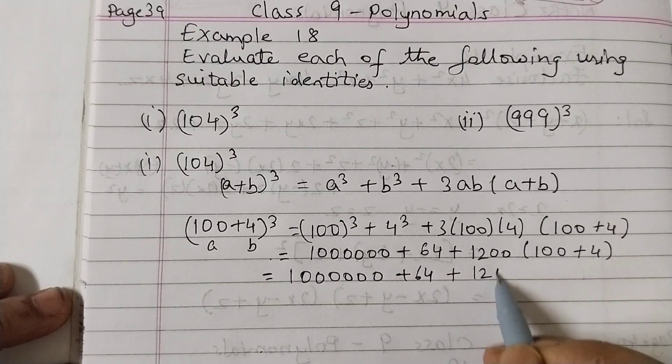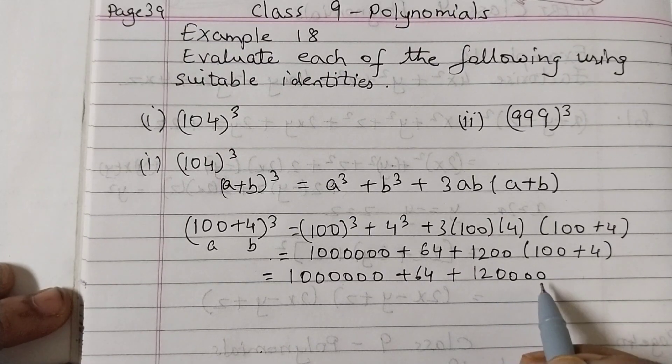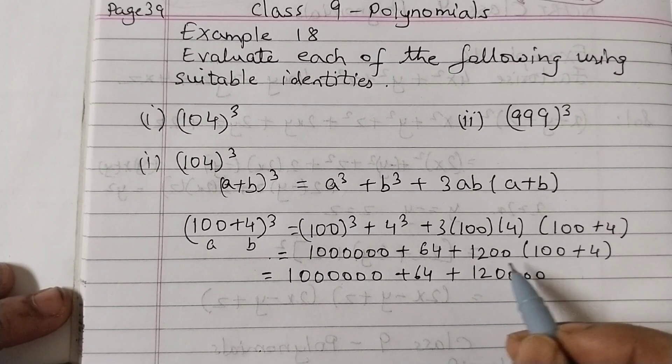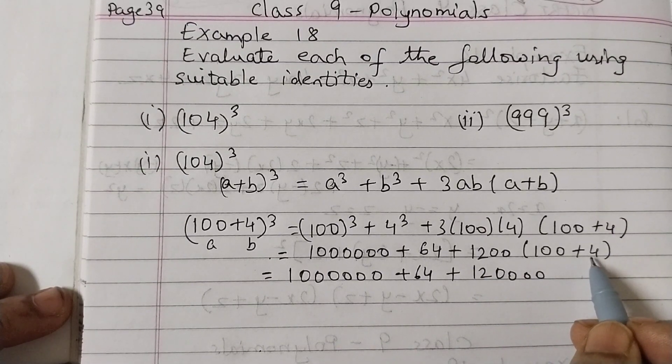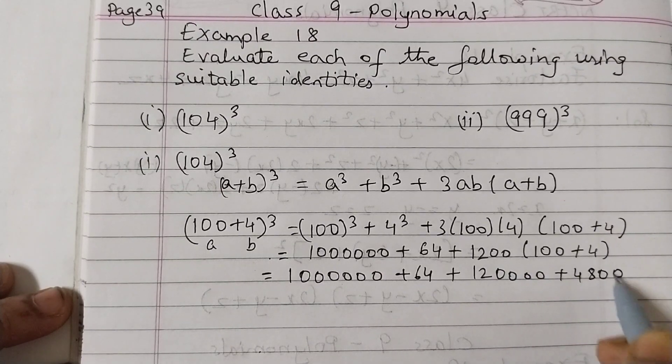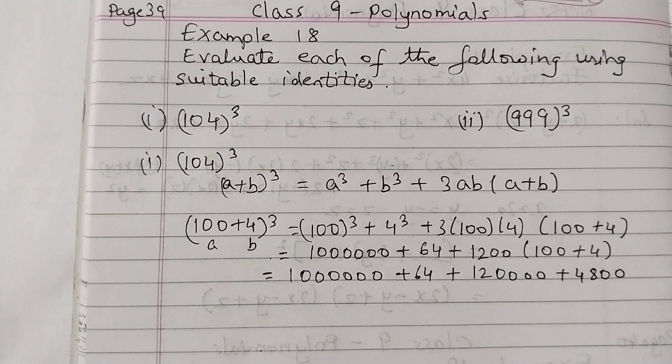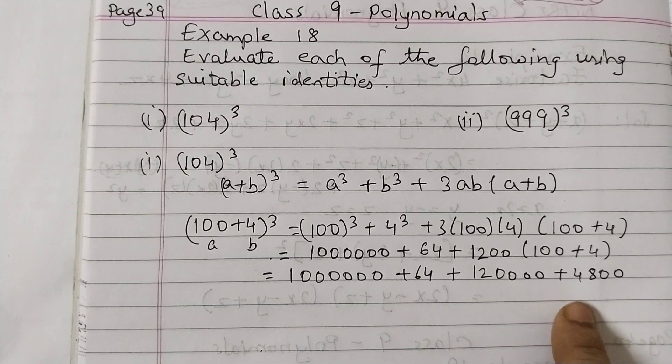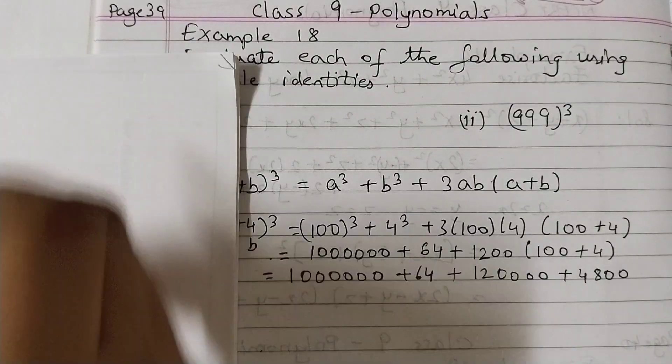So just add these two zeros, so this will become one, two, three, four, and 12. And 12 into 4 is 48, and put the two zeros so that's 4800.